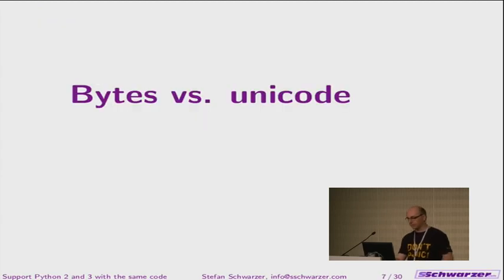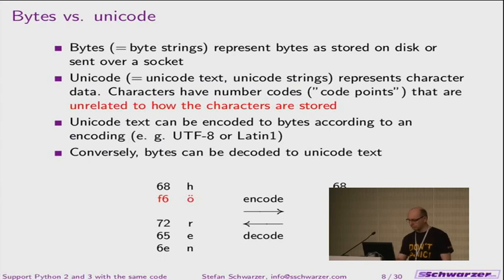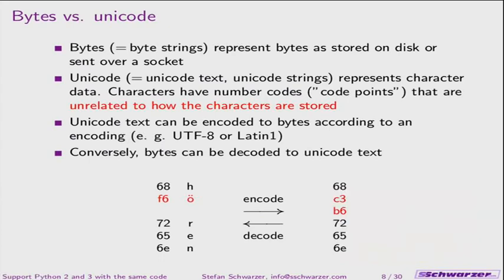One major problem — there are many things, but I think the most important when adapting code for Python 3 is the bytes versus Unicode topic. In both Python 2 and 3 we have bytes or byte strings. In Python 2 the terminology is mostly 'byte strings', whereas in Python 3 documentation it says 'bytes', because the intention is you don't use it for character data — only for encoded character data. These are the raw bytes you store on disk or send over a socket.